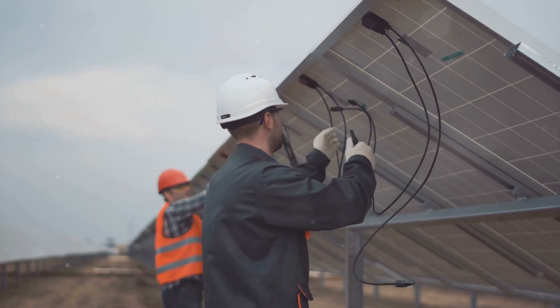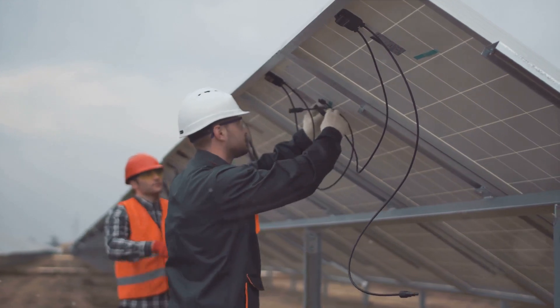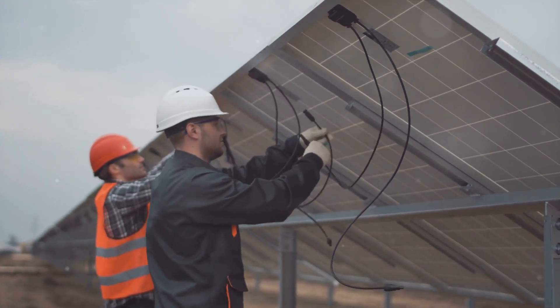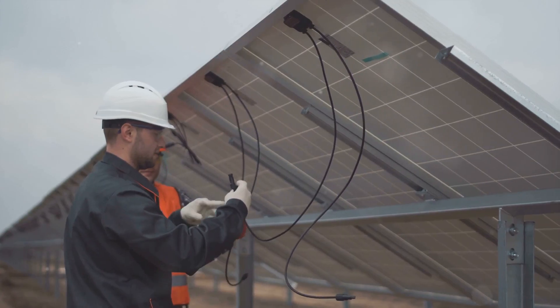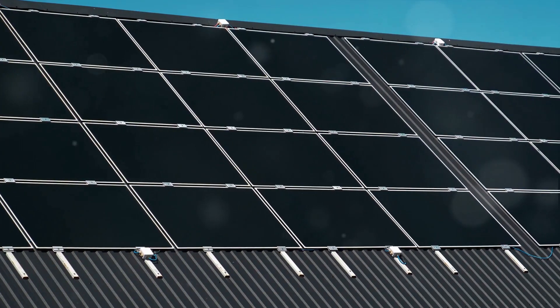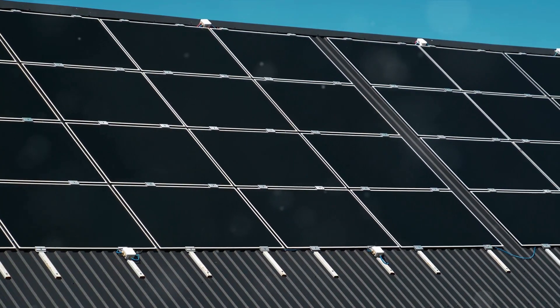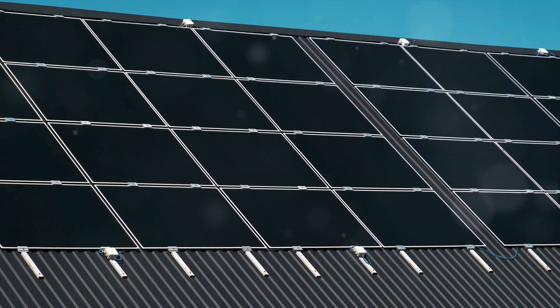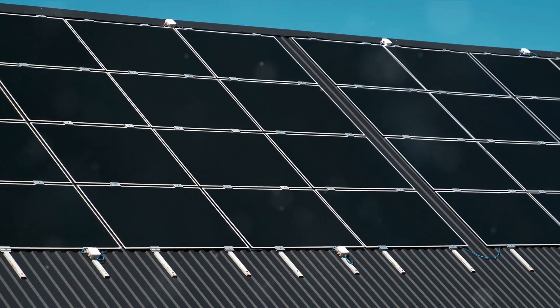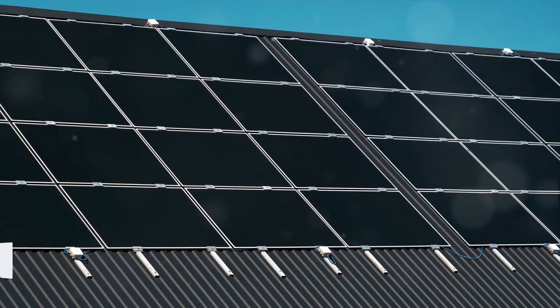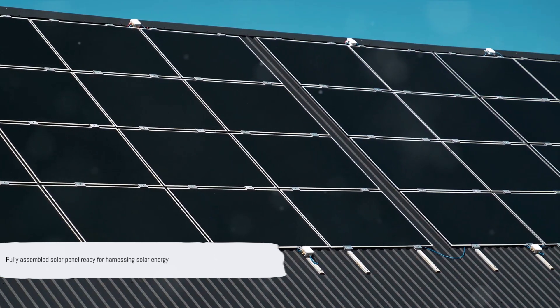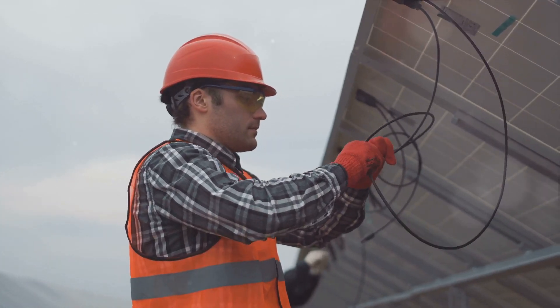Frames are added to provide structural support, ensuring the panel can withstand the test of time. To finish up, junction boxes are attached. These handy little components allow for electrical connections, making it possible for the panel to feed the energy it generates into an electrical system. And just like that, we have a fully assembled solar panel ready to harness the sun's energy.